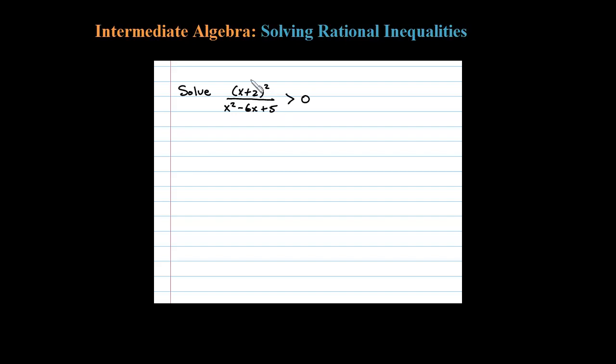Here I'm asked to solve this rational inequality. The first thing I like to do is factor these, so I'm going to rewrite this in an equivalent form: (x+2)² over... Now factoring that trinomial I'll have x